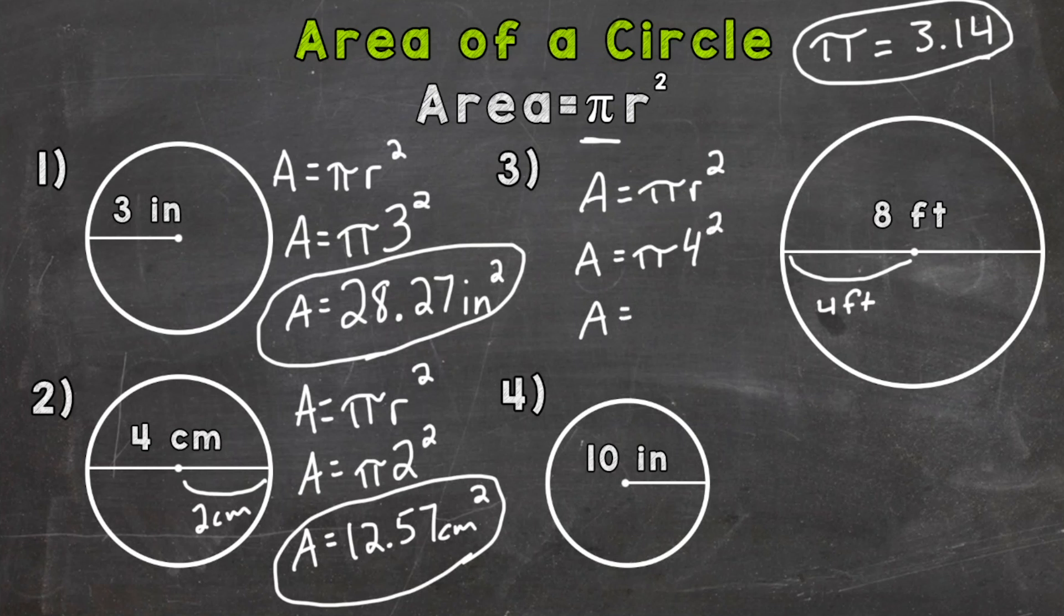So once we plug that in we would get 50.27 centimeters squared. And again for number two and three just like number one our decimal is going to be a fairly long decimal there so we're rounding to the hundredths place.